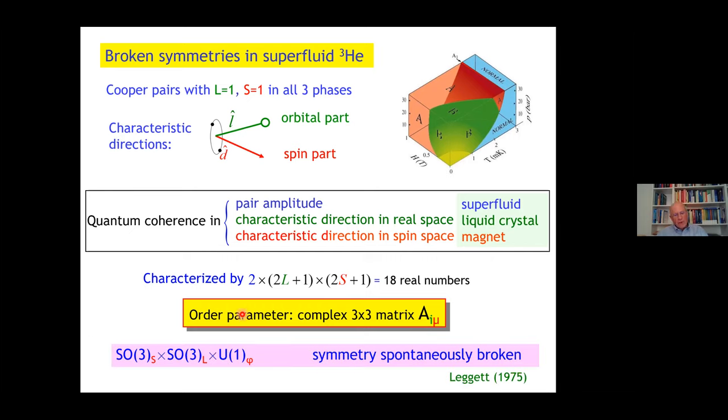In the superfluid, this big symmetry group, SO3 in spin, SO3 in space, and U1 in the gauge, is spontaneously broken, as first pointed out by Tony Leggett. We should multiply to it the parity operator and the time reversal. This is reminiscent of the big symmetries we know from particle physics.